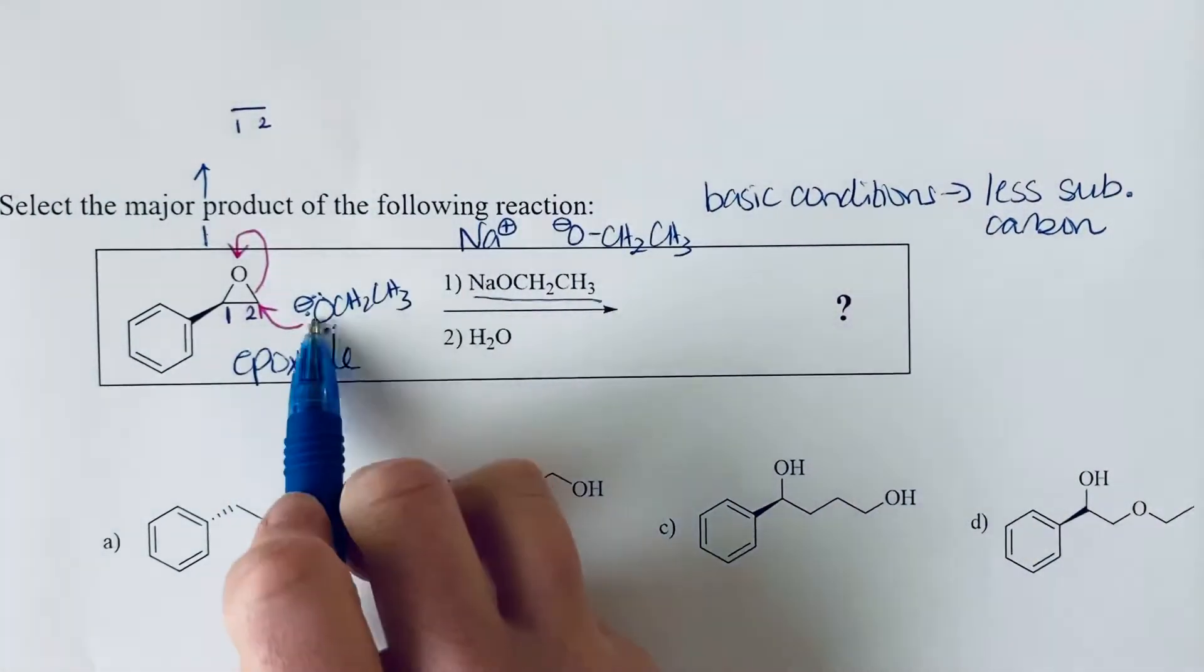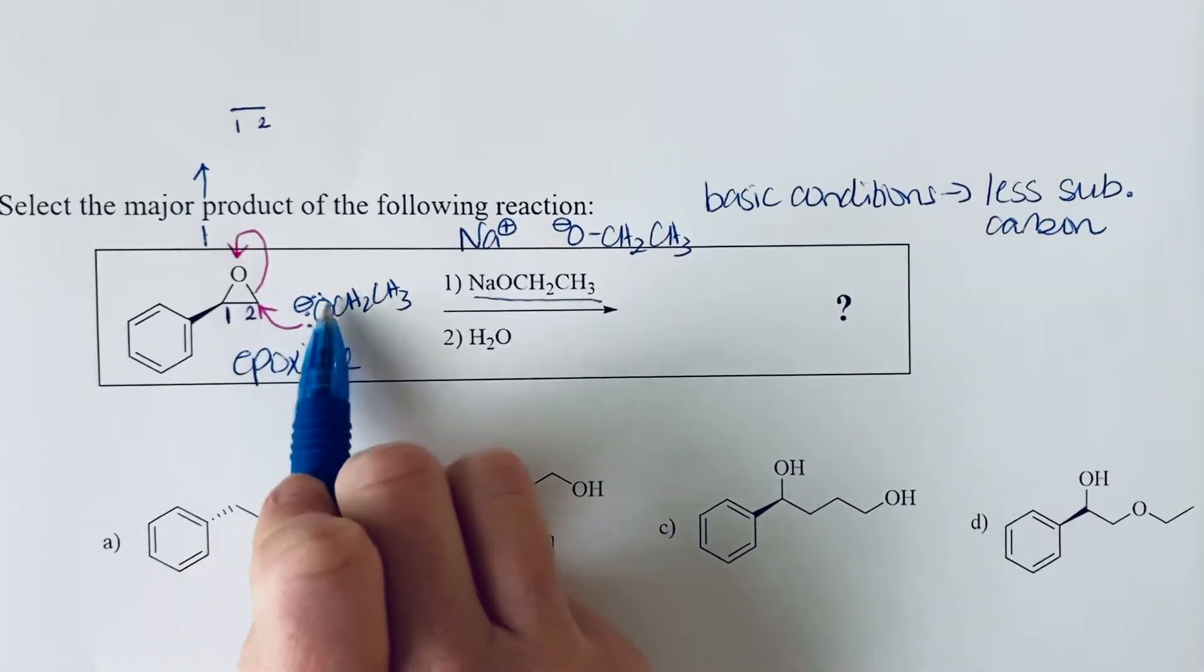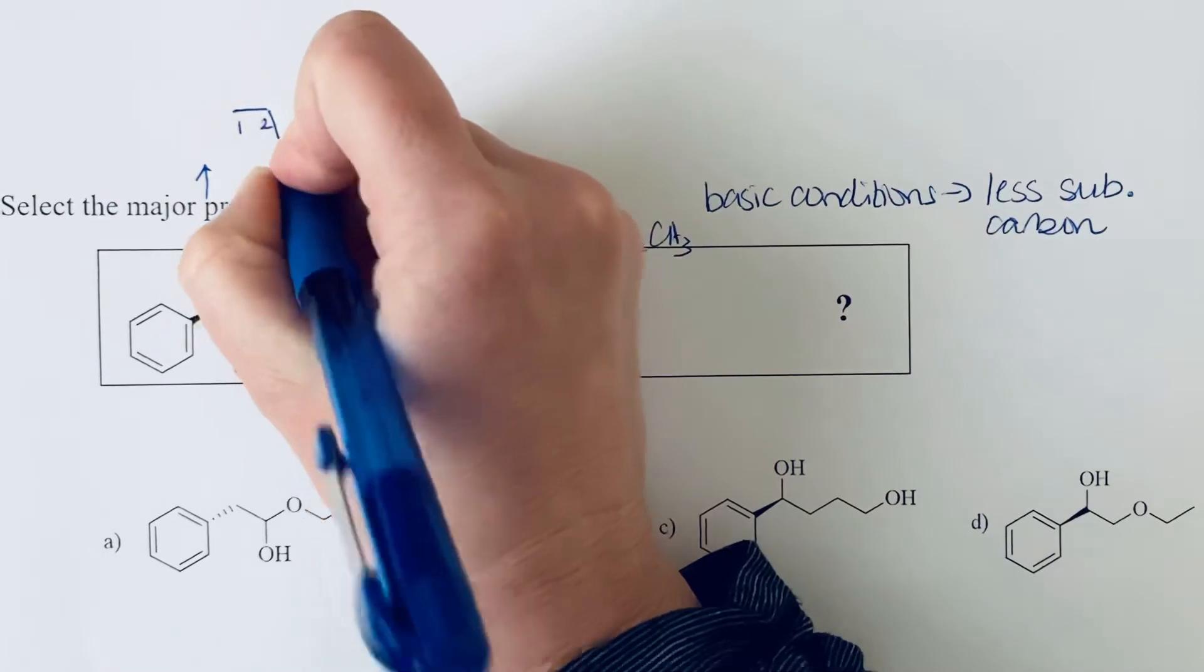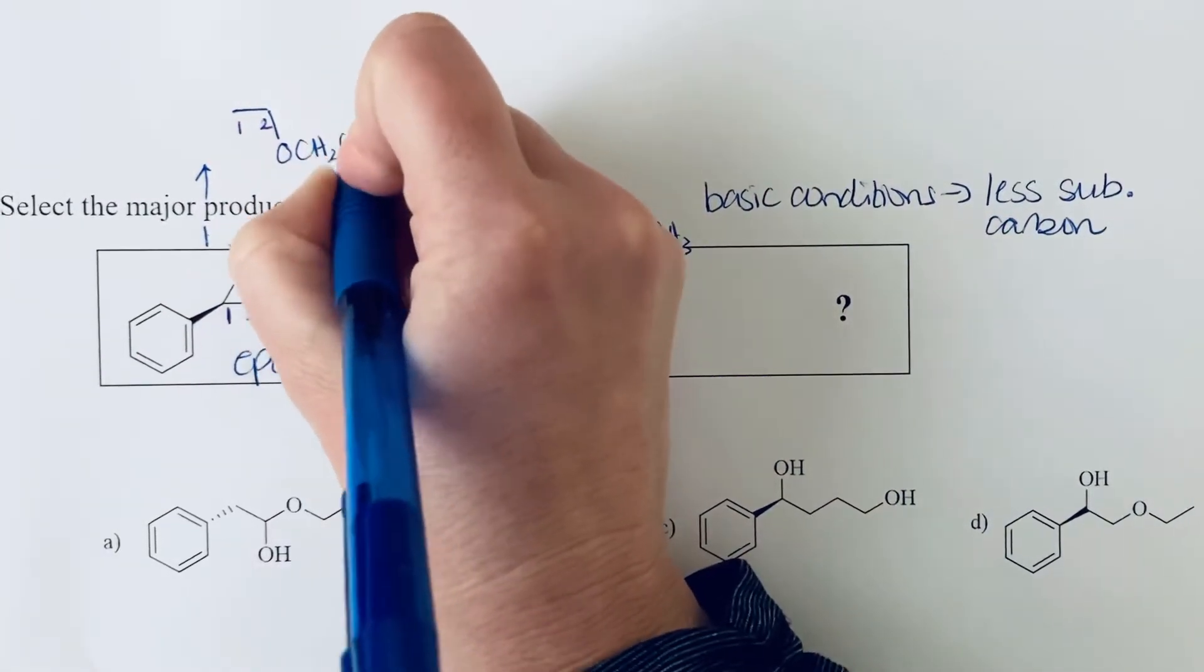What we're showing here with this arrow is that we're forming a new bond between this oxygen and carbon two. We will draw that new bond to oxygen, and it's still attached to the ethyl group.